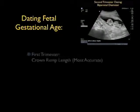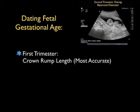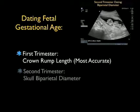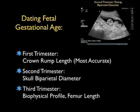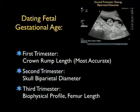The first concept we'll focus on is dating fetal gestational age. In the first trimester, we're going to use an assessment of the crown rump length. Dating in the first trimester is actually the most accurate during all phases of pregnancy, as there's a difference in the growth curve as the fetus develops. In the second trimester, we'll measure the skull biparietal diameter, and in the third trimester, dating is composed of a biophysical profile focusing on the femur length as well as other biophysical measurements.